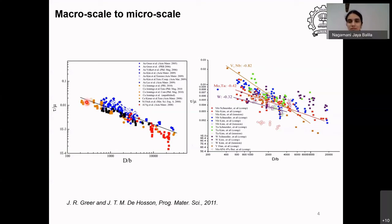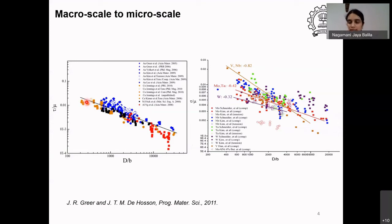Smaller is stronger — that is the buzz phrase used to describe this phenomenon. People were interested in why this is happening and whether, if the yield strength goes up, then the load-bearing capacity of the material actually goes up too. So people were interested in measuring these things.